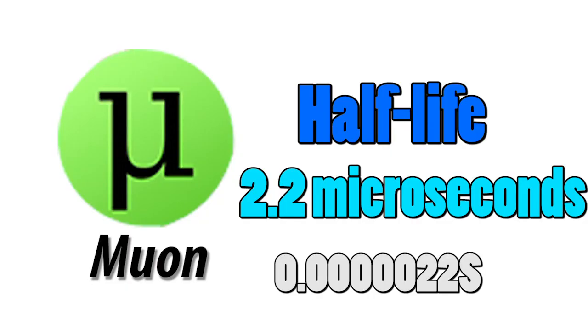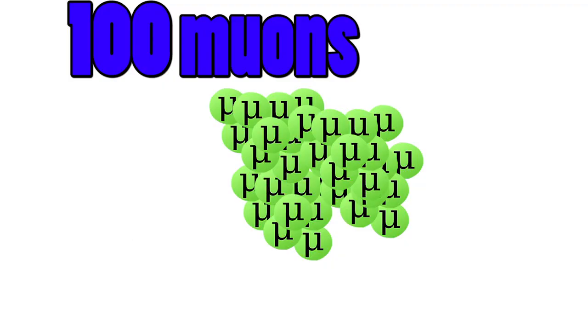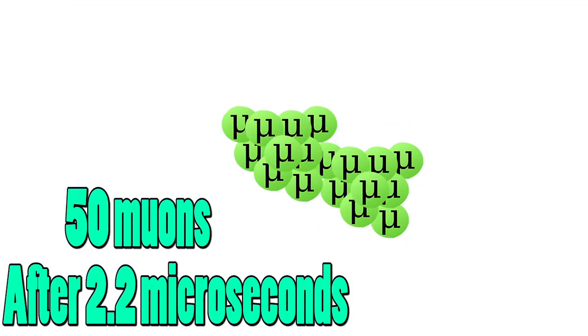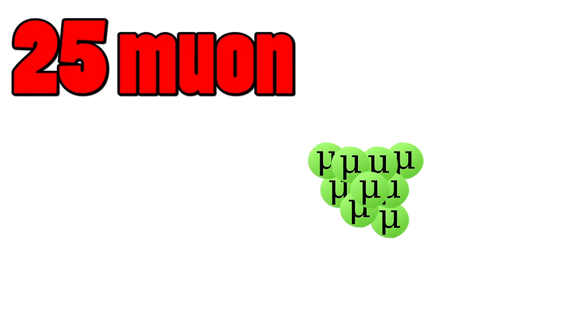Muons have a half life of 2.2 microseconds. This means if we have 100 muons we would only be left with 50 of them after 2.2 microseconds, and after another 2.2 microseconds we would be left with half of 50, that's 25, and so on.